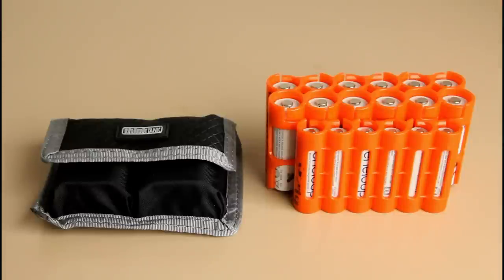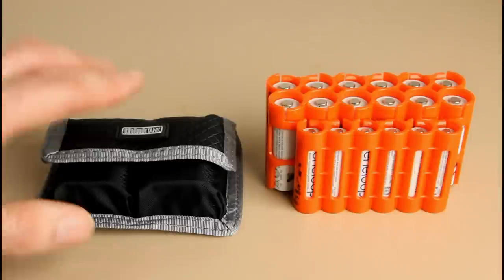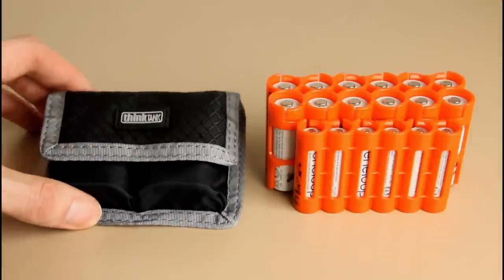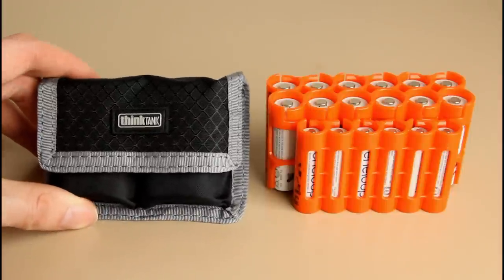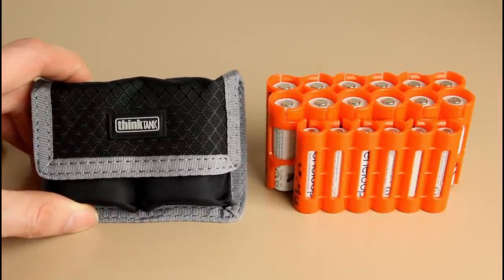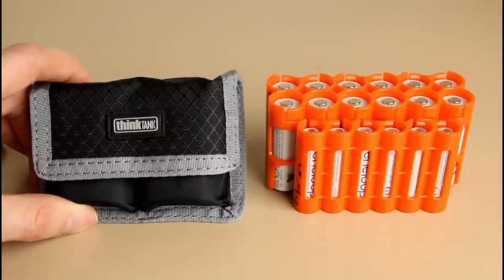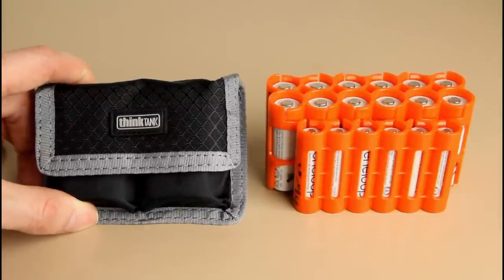So when it comes to keeping everything together and maximizing the amount of space that you've got, getting the right kind of containers for the batteries or cases can help with that really. The first thing I'm going to look at here just quickly is the Think Tank battery case. Now this is for the Canon LP-E6 batteries and both the cameras that I shoot with use this battery, so that's good.